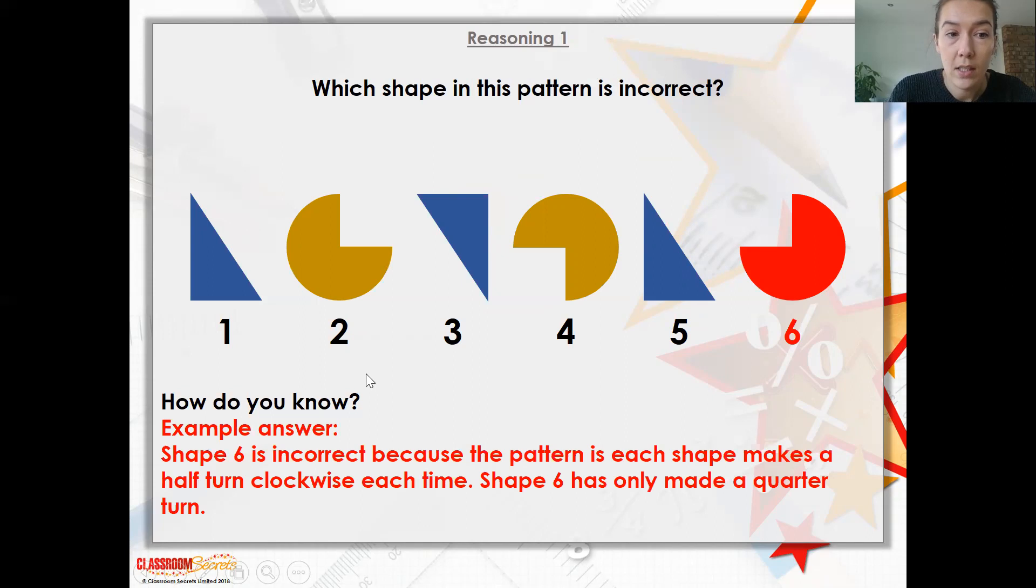So it says shape six is incorrect because the pattern is each shape makes a half turn clockwise each time. And shape six has only made a quarter turn. So each time it's making half a turn clockwise each shape is. So the triangle's done that and sort of the circle with the quarter missed out.